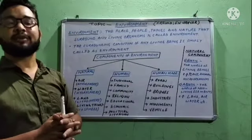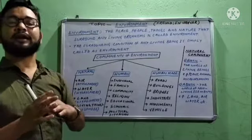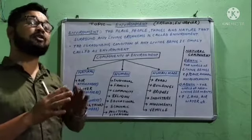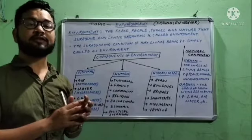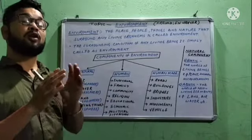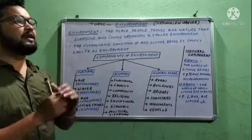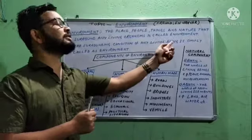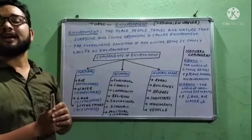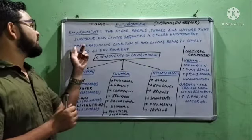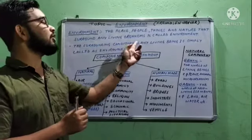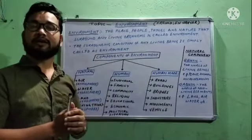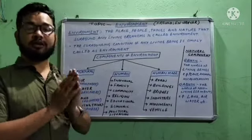That means the place, the people, living organisms, and other natural things which are surrounding any living being is called the environment of that living being. Simply put: the surrounding condition of any living being is called environment. This is the simple definition of environment.